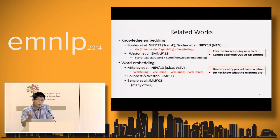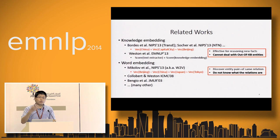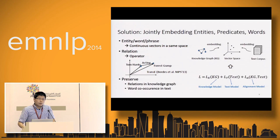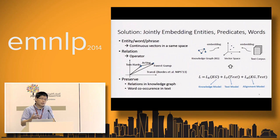We propose to jointly represent entities, predicates, and words in the same vector space, so that even when a candidate triplet contains entities out of KB, as long as those entities appear in text as words, we can still provide a score for candidate facts. We believe utilizing semantic knowledge from the KB should help guide word embedding learning. By jointly embedding, we represent entities, words, and phrases as continuous vectors in the same vector space. For relationships in KB, we represent operators in the space — the simplest case being the translation vector used in Trans-E, e.g., the Tom Hanks vector plus acting vector is very close to Forrest Gump.